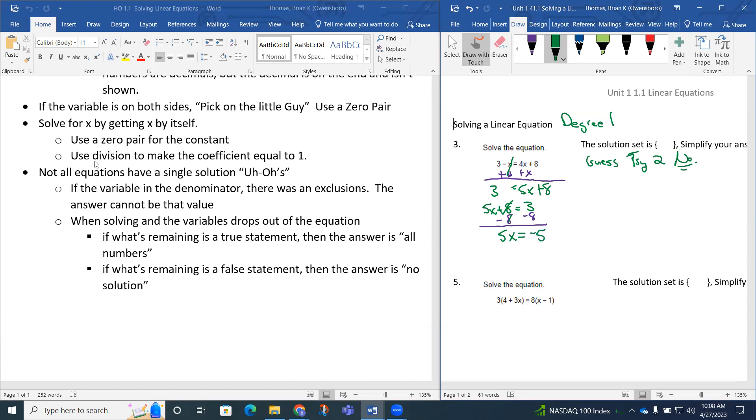The next thing is to use division to make the coefficient equal to 1. The coefficient of x is 5, so I want to divide by 5. When I divide each side by 5, the 5s will divide out and turn into a 1. 1x is the same as simply writing x. Negative 5 divided by 5 is negative 1. So our solution is negative 1. Our solution set is negative 1.